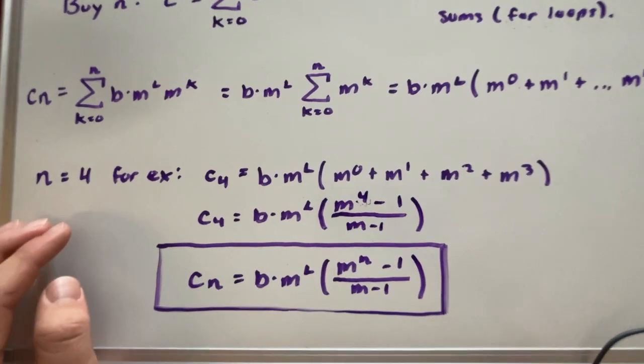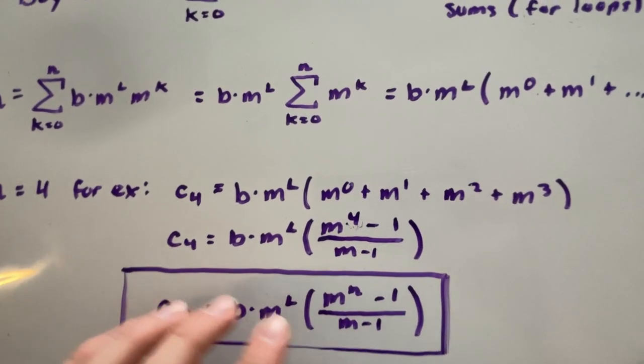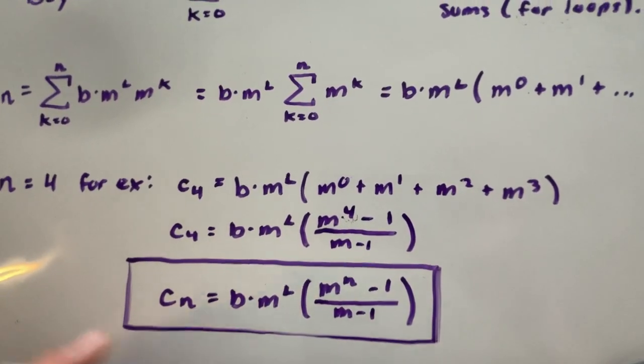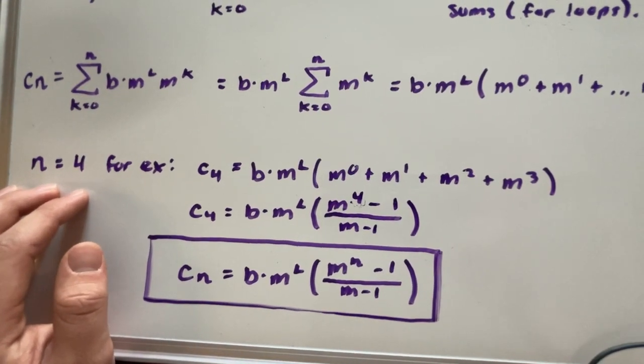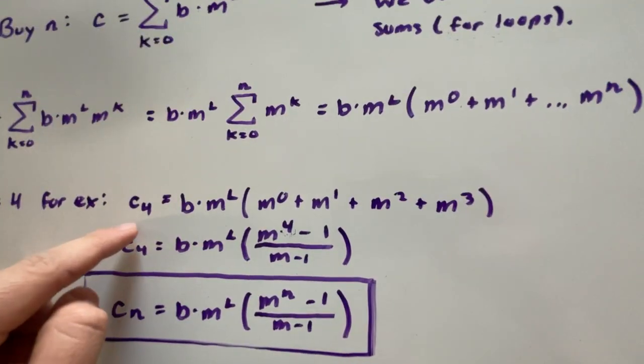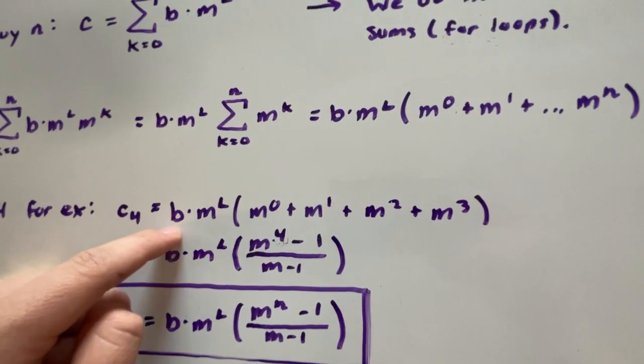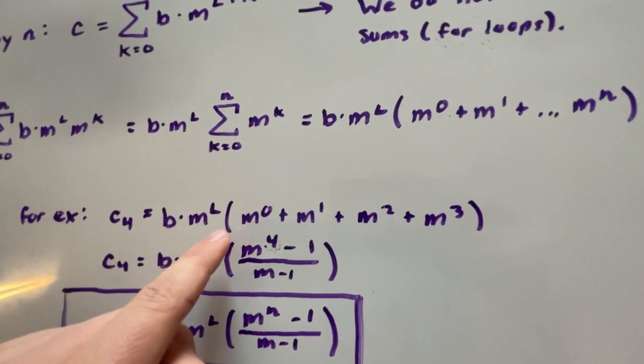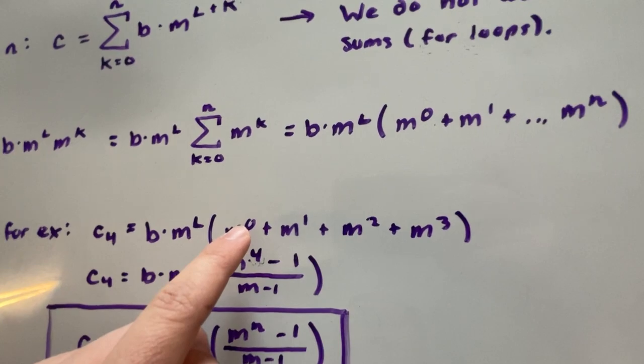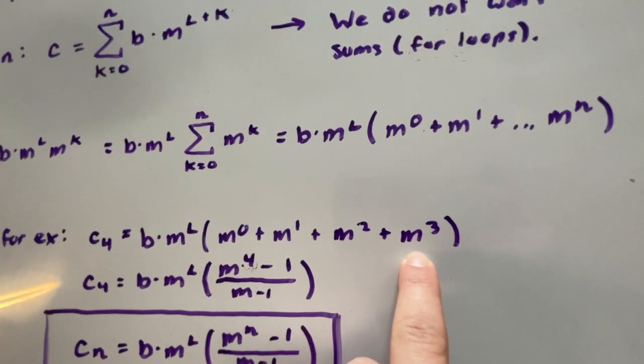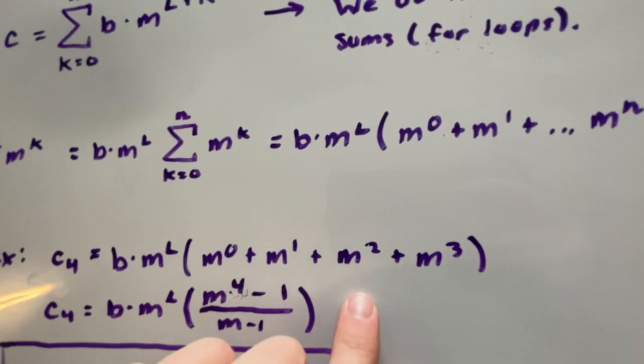For example, just ignore this equation here. I'll explain how we get here later on. But let's just say our n is equal to four. Our cost for the four upgrades is going to be equal to b times m to the power of l, all that multiplied by m to the power of zero all the way to m to the power of three. However, we can simplify this equation.